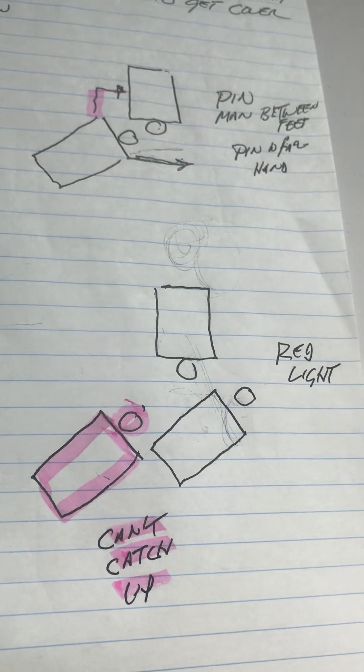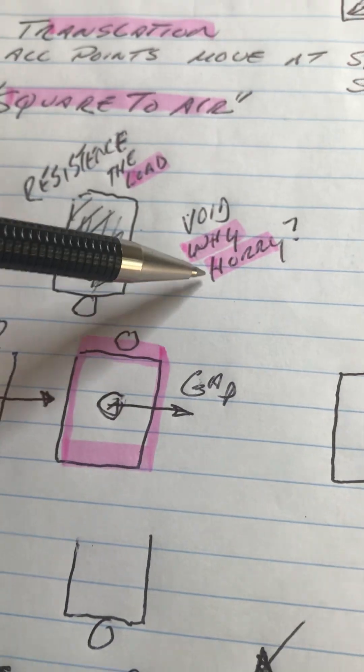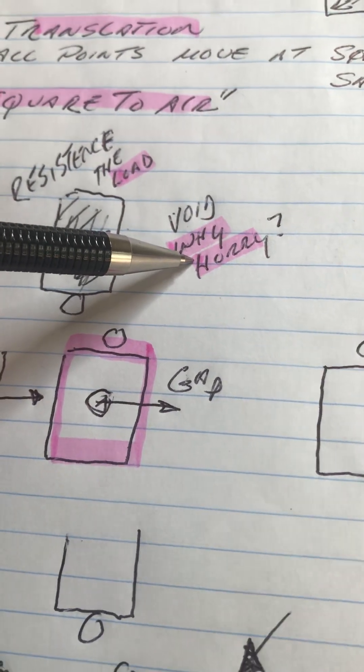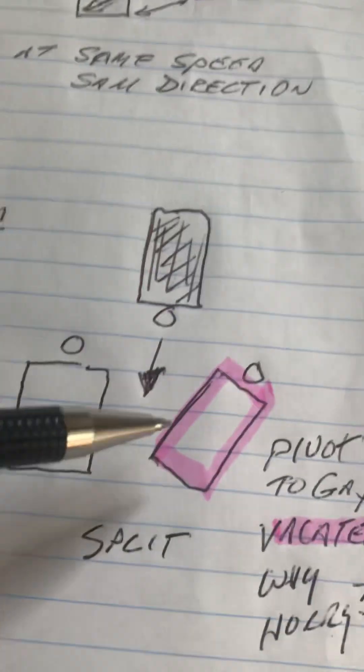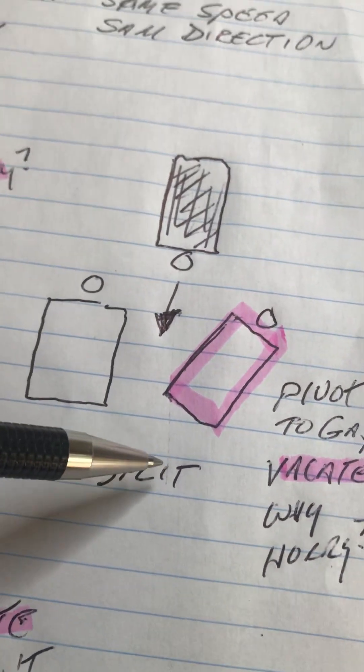So that's why we try to stay square to air. We try to stay square to air. Square to air. Why hurry into a void? Don't leave your man hanging. Don't get split.